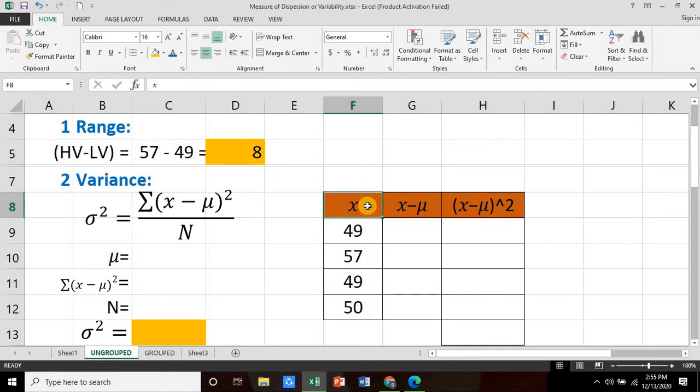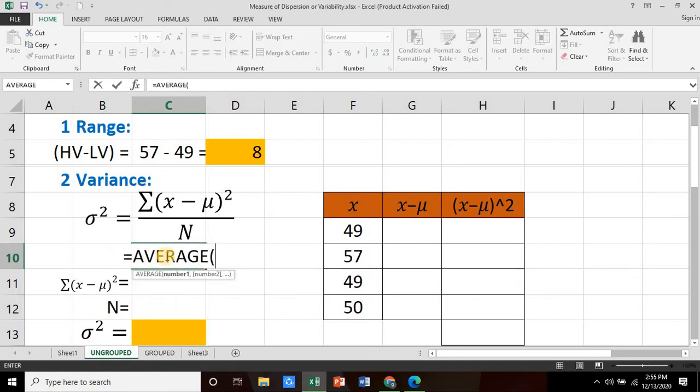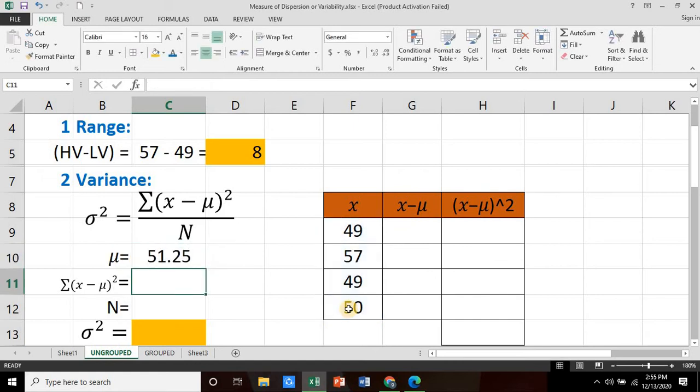So in our table, the first column would be our observation. In our second column, this is the difference of the observation and the mean. To do that, we need to take the mean or the average of the observation. So this is simply using Excel formula: equals average. Then open parenthesis and we highlight this observation. Press enter and we have 51.25.